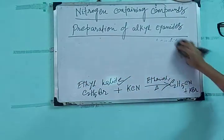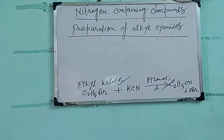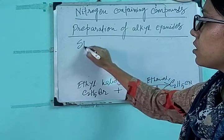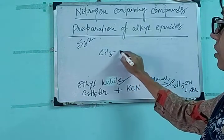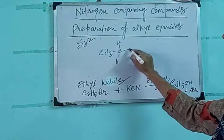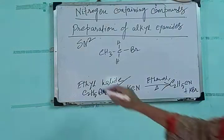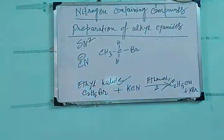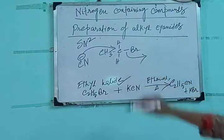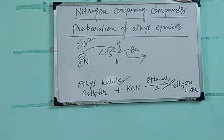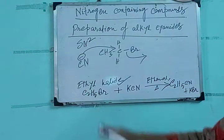The mechanism for this reaction: as you have learned about SN1 and SN2 reactions, this particular reaction follows the SN2 path. In the case of SN2 reaction, the main characteristic is the back-side attack by the nucleophile. So the nucleophile — cyanide — attacks the ethyl halide from the back side, and departure of the leaving group bromine happens.